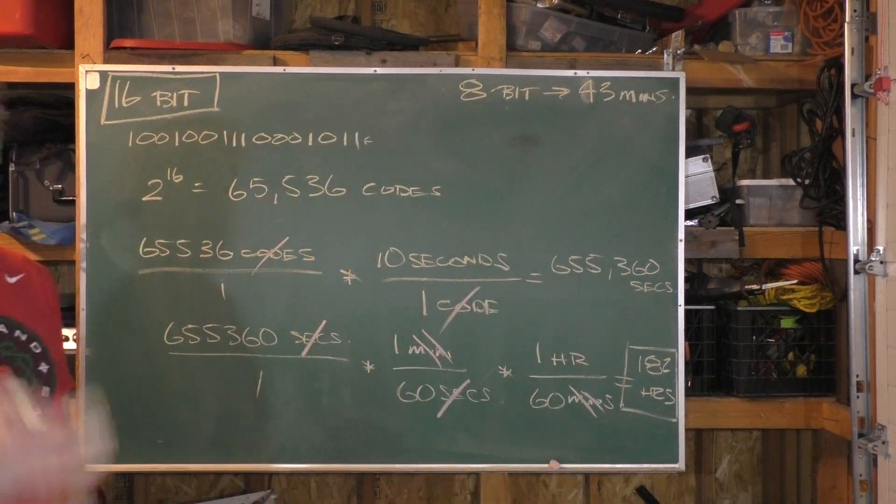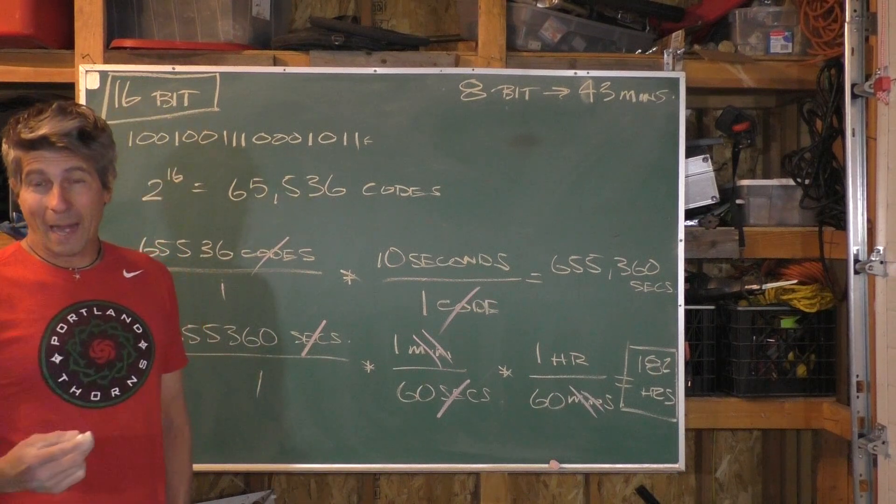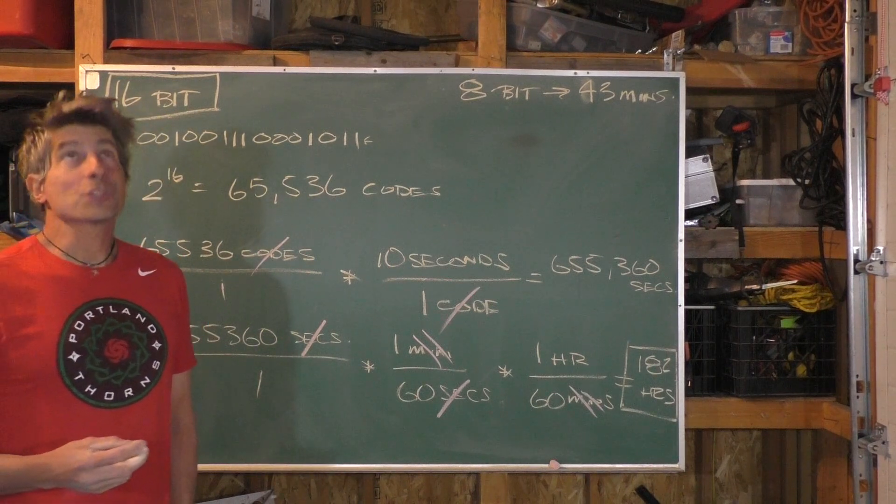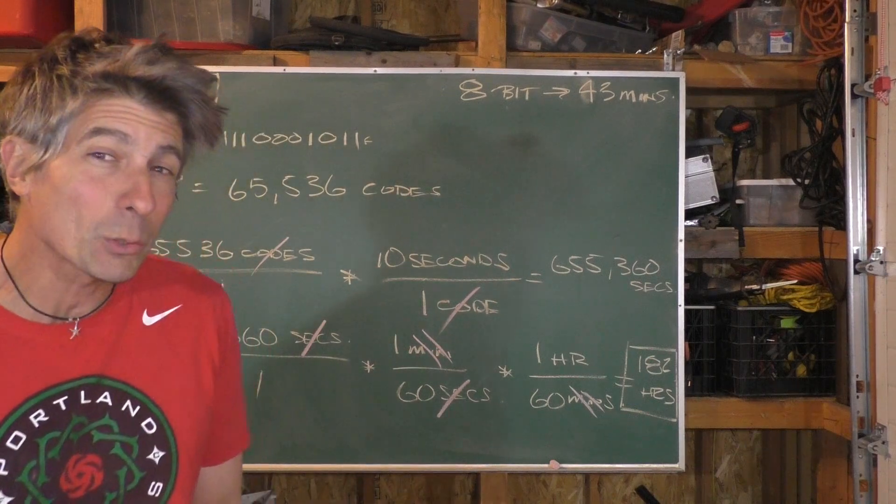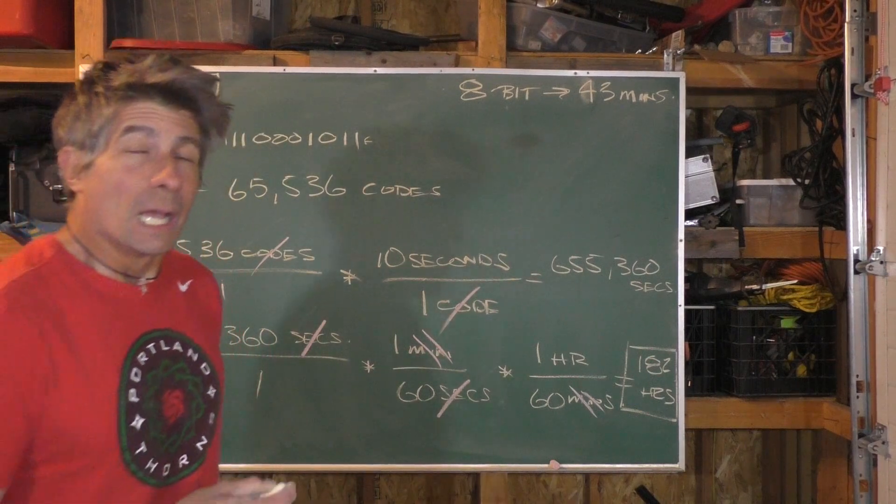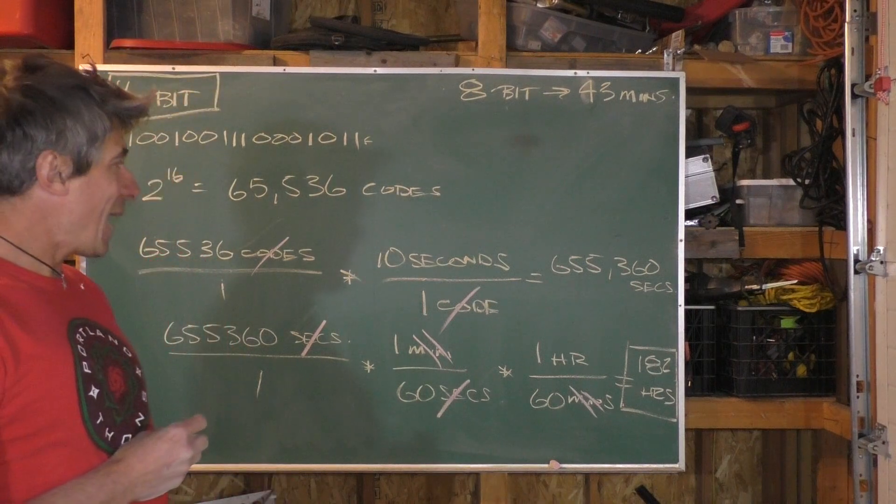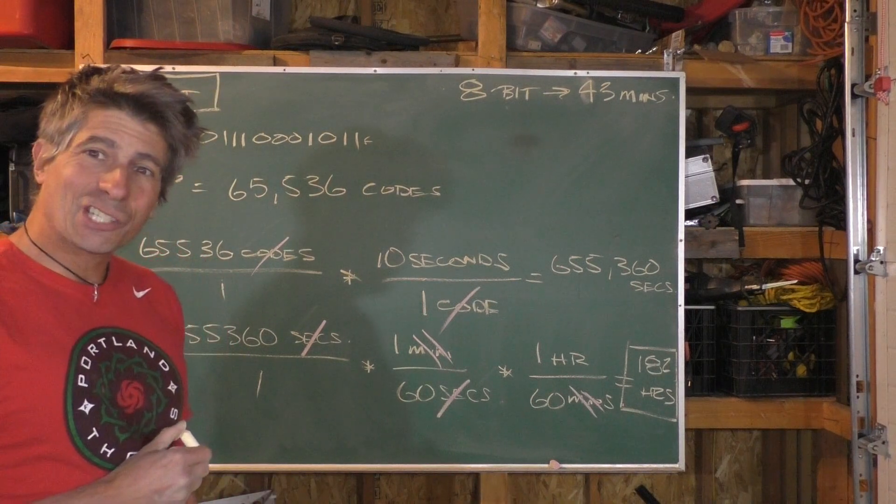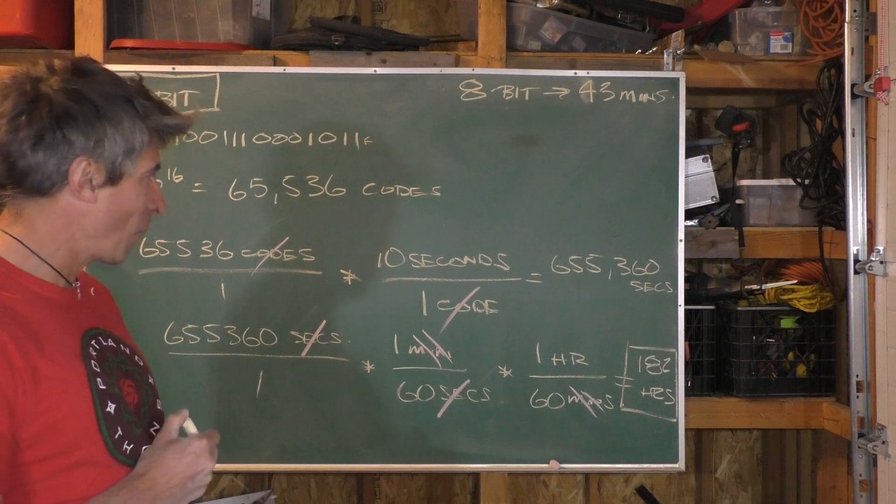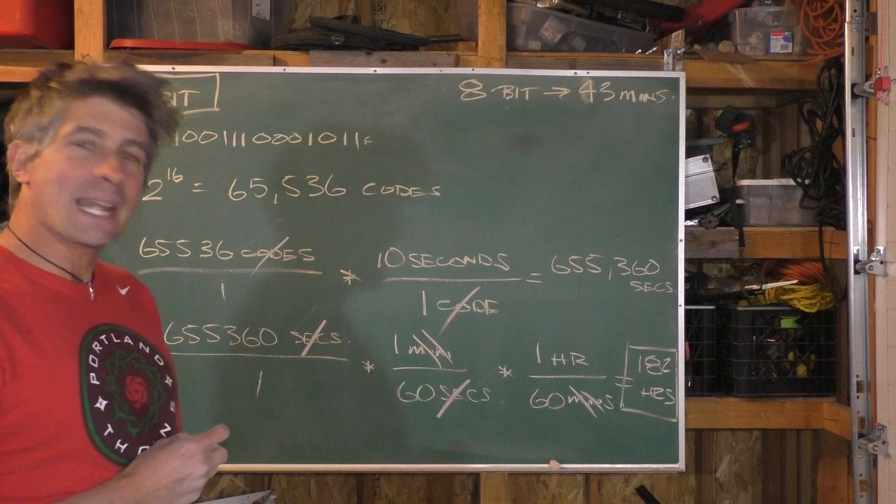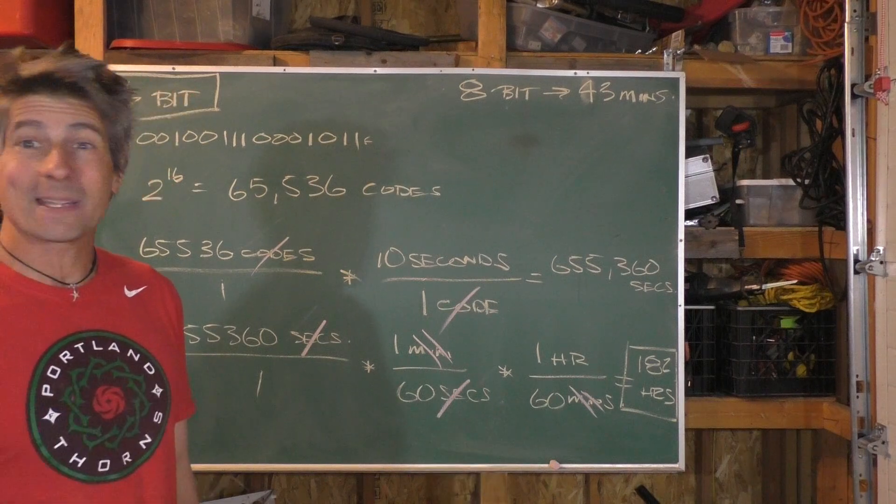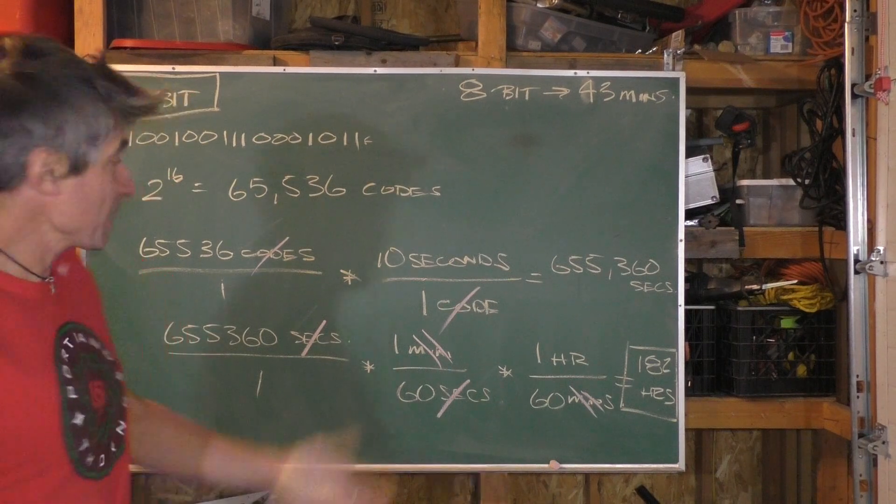Which we are now in the multiple days category because every 24 hours is one day. So 48 hours is two days, 96 hours is four days, oh boy, 120 hours is five days, 144 hours is six days, 168 hours is seven days, we're somewhere between seven and eight days.